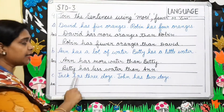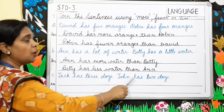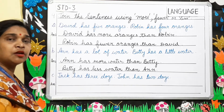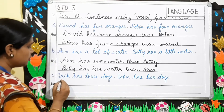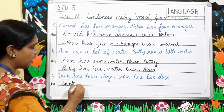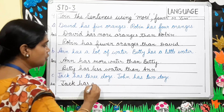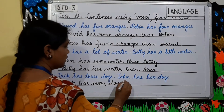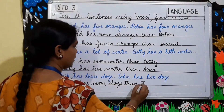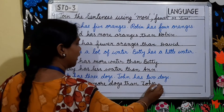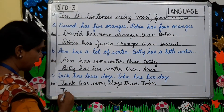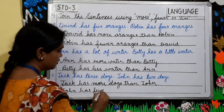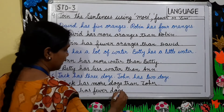Number C: Jack has three dogs. John has two dogs. Who has more dogs, children? Jack. And who has got fewer dogs? John. So for Jack you will say: Jack has more dogs than John. And for John you will write: John has fewer dogs than Jack.